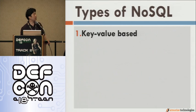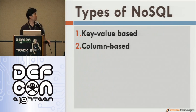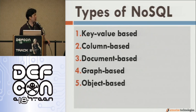There are a lot of families to NoSQL: key-value-based databases, column-based databases, document-based databases, graph-based databases, object-based databases, and so on.